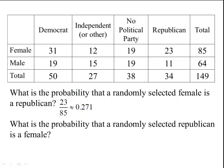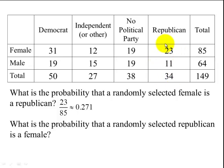What is the probability that a randomly selected Republican is a female? Now we're only looking at the Republicans. We had 23 females out of a total of 34 Republicans. So the probability is 23 divided by 34, which is about 68%.